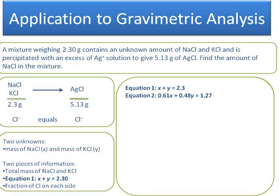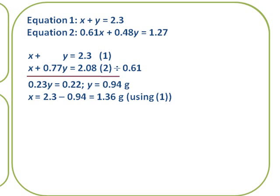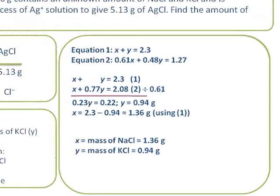So now I have my two equations; the rest is easy. I want to solve by elimination, so I'm going to divide equation 2 by 0.61 to match up the X values. I'll subtract the second equation from the first, which gives me a value for Y: 0.94 grams. I can substitute that in using equation 1 to work out the value for X: 1.36 grams. So X is the mass of sodium chloride, 1.36 grams, and Y is the mass of potassium chloride, 0.94 grams.